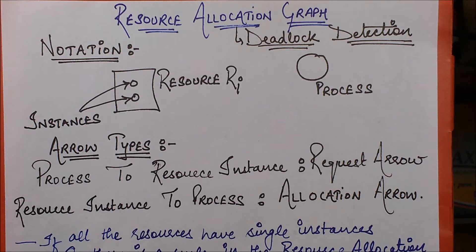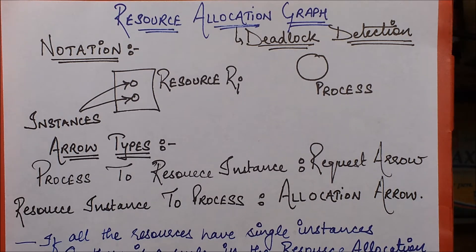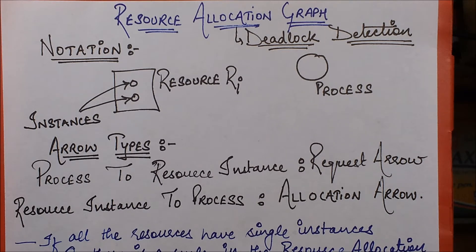In this session, I'm going to discuss a very important concept of deadlocks: the resource allocation graph. Resource allocation graph is used when you are trying to detect a deadlock or seeking a safe sequence in order to avoid a deadlock. So it is basically used in both deadlock detection and deadlock avoidance.